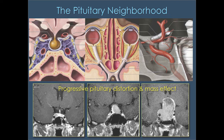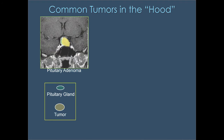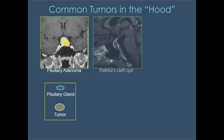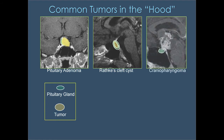Pituitary tumors are the most common tumor in this region, but there are others. Rathke's cleft cysts occur where the gland surrounds a cyst. Craniopharyngiomas are benign but very invasive, getting stuck to the optic nerves and blood vessels — the gland is typically below, and the tumor extends toward the brain and hypothalamus, often pushing the optic chiasm forward.